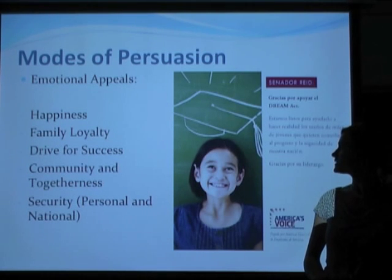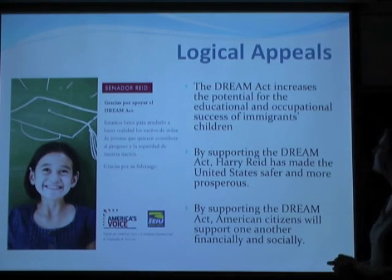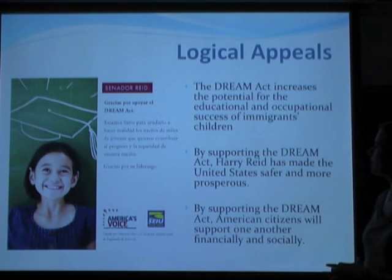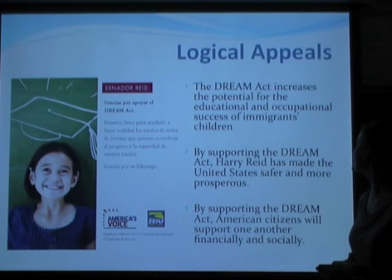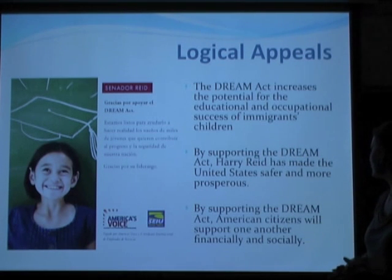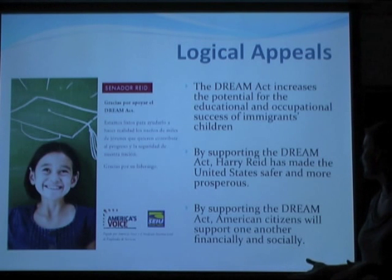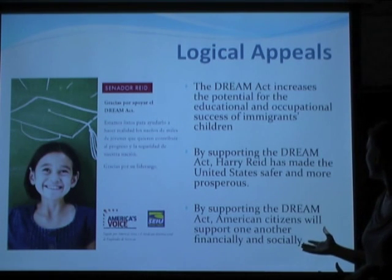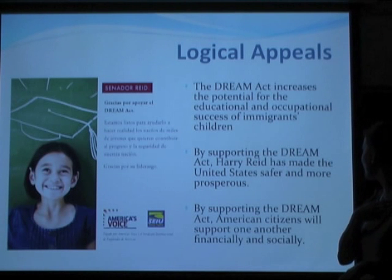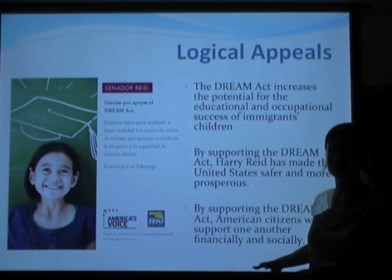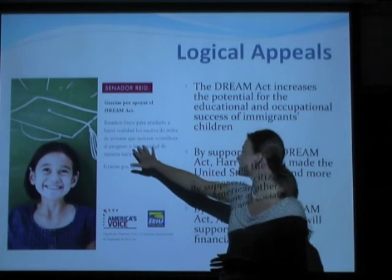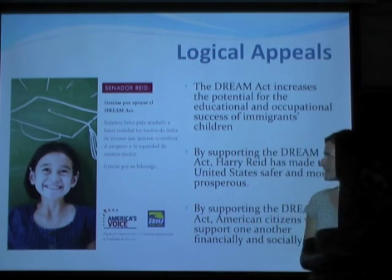Logical appeals are somewhat basic in this piece. The DREAM Act increases the potential for the educational and occupational success of immigrants' children. Therefore, by supporting the DREAM Act, Harry Reid has made the United States a safer and more prosperous place. By supporting the DREAM Act, American citizens will support one another financially and socially. The social organizations indicate the social significance of the DREAM Act, and the language about the progress and security of the nation indicates the financial success of the nation.